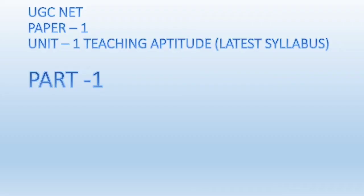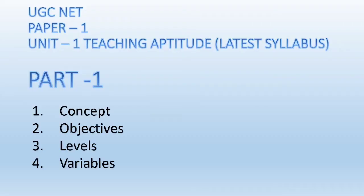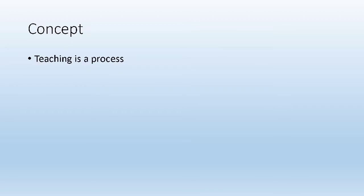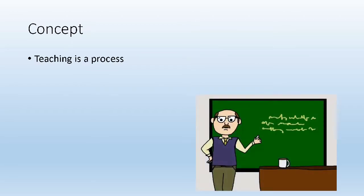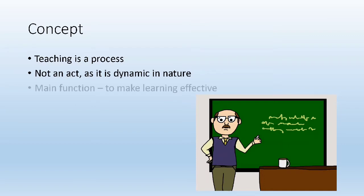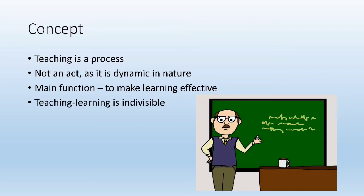Let's quickly start with the video. In this video, we are going to cover concept, objectives, levels and variables of teaching. Starting with the concept, we can say that teaching is a process because it is continuous and is not an act. Its main function is to make learning effective. Teaching and learning both go hand in hand, but this does not mean that there can be no learning without teaching.